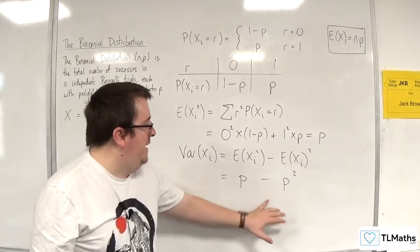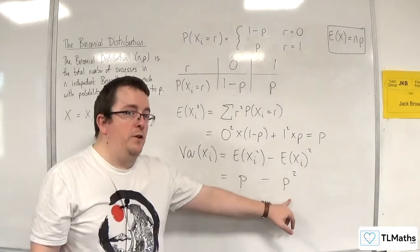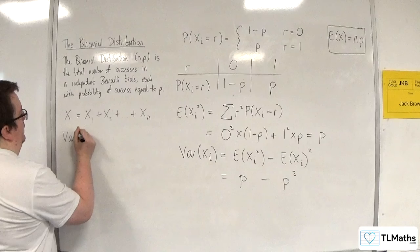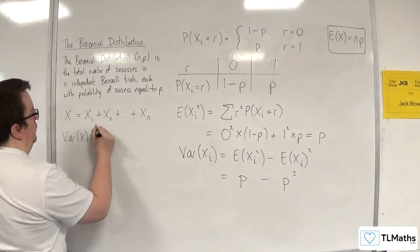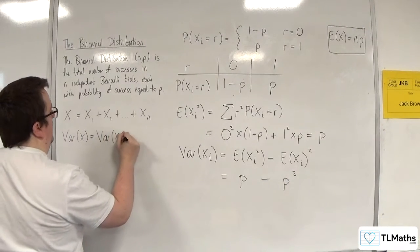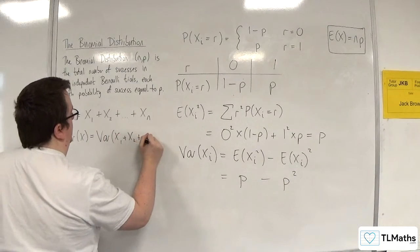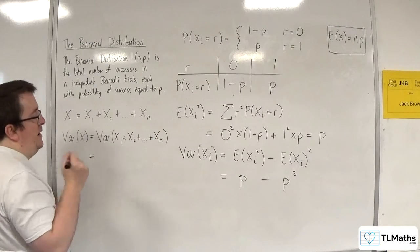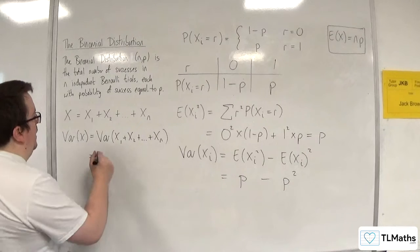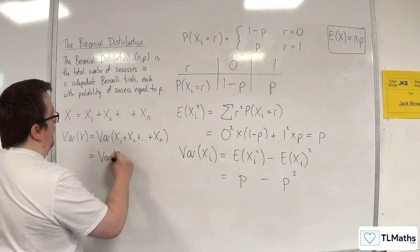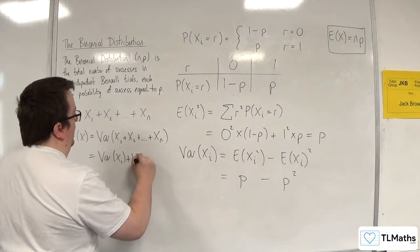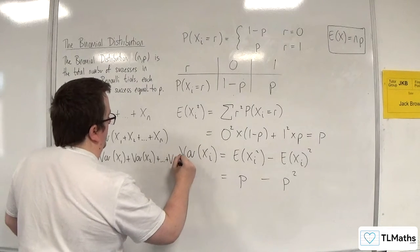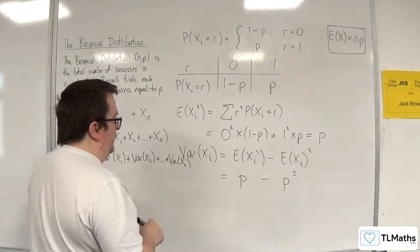That is the variance of each of my Bernoulli trials. I want the variance of the binomial distribution, which is Var(X₁ + X₂ + ... + Xn). From our discrete probability distribution knowledge, we can break that apart: Var(X₁) + Var(X₂) + ... + Var(Xn).